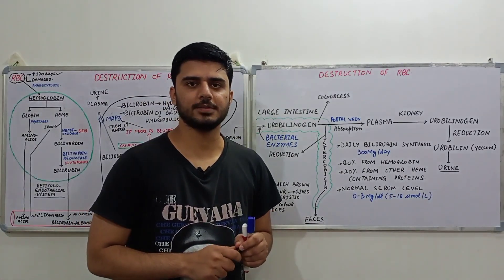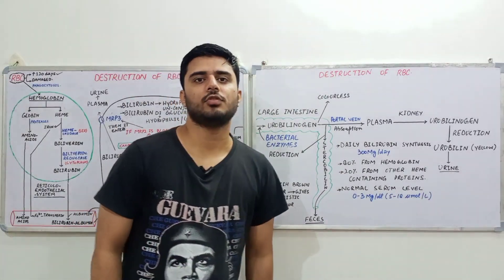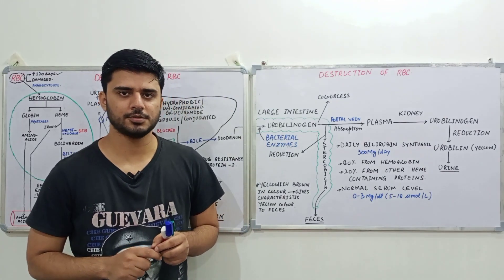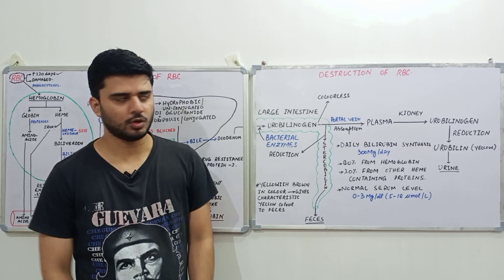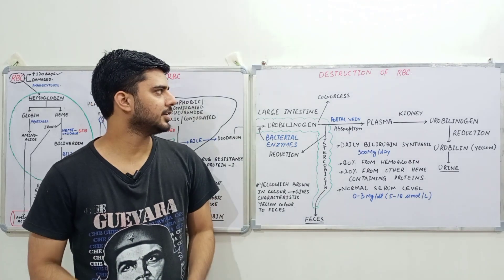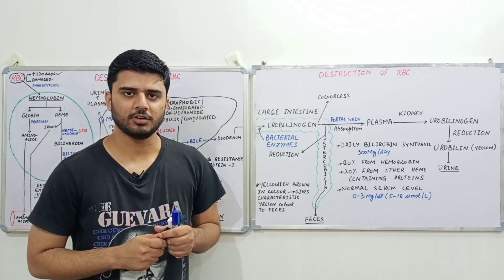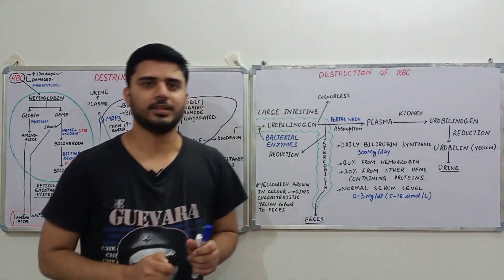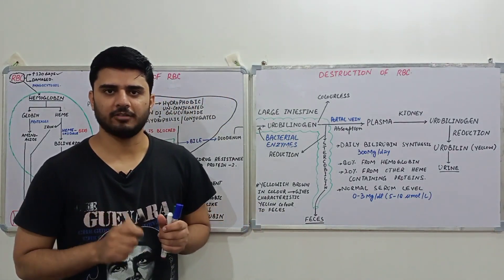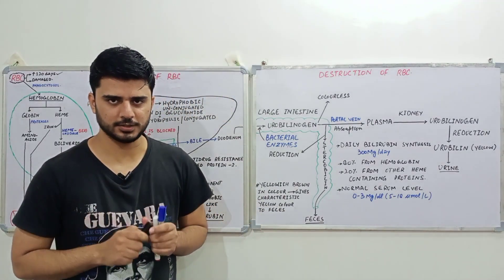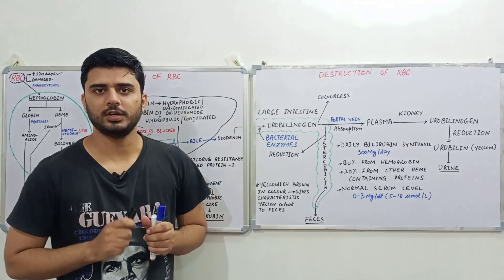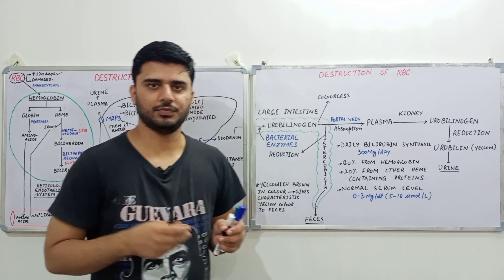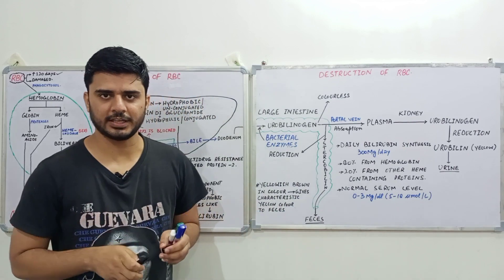Hello and welcome everyone to Synapseed. So far in our previous lectures we have discussed about the formation of various cellular components as well as the formation of hemoglobin. In today's lecture we'll be discussing about the fate of RBC, or the destruction of the RBC. The normal lifespan of RBC is not more than 120 days.